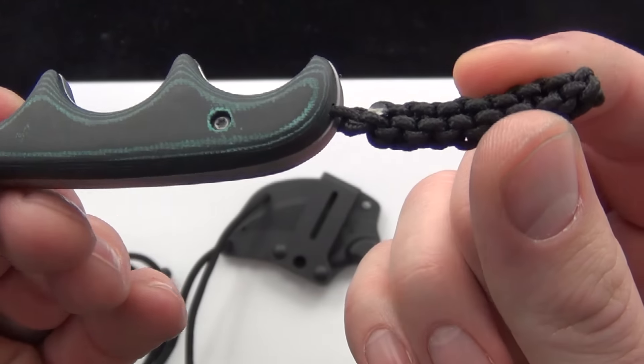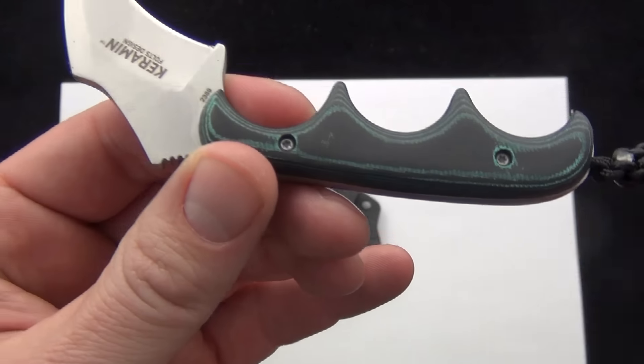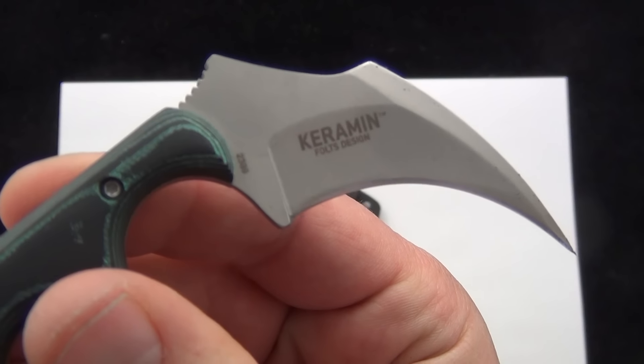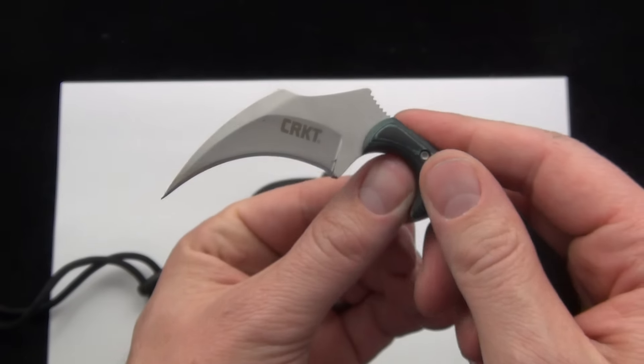Handle scales, small little lanyard there, pre-installed. And on the back, Karambit Foltz Design, and on the front there, CRKT.